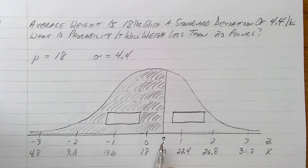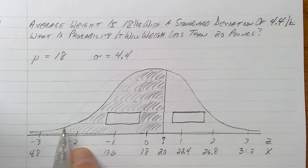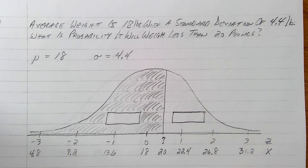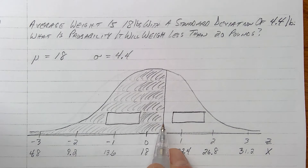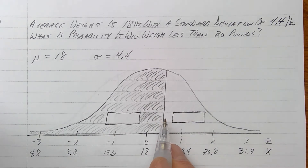I need to know what that Z number is so I can grab my Z table and look up that Z score. The table will tell me area to the left — all the people living to the left of this number. So I draw a line straight up and shade to the left. That gives me a visual of what I'm looking for: the area to the left of whatever this Z number turns out to be. So I need to change my 20 pounds to a Z number — it's going to be something between 0 and 1. Once I find that Z number, I grab my Z table and look it up.